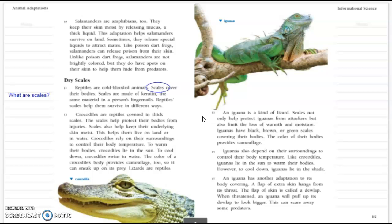So how am I going to find what the definition of scales is? There's this word, R, right here. That is a context clue that tells you that the definition may come after. So scales are made of keratin, the same material in a person's fingernails. So I know that my fingernails are kind of hard. So I wonder if scales are hard. What do you think?